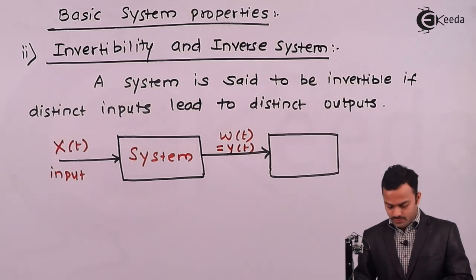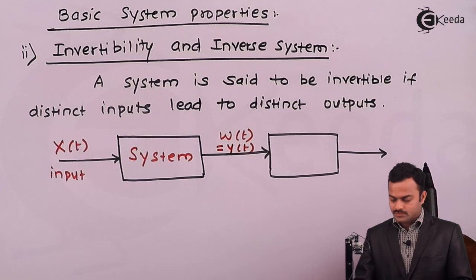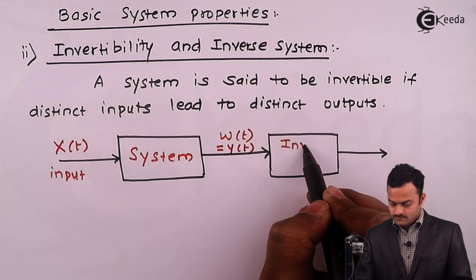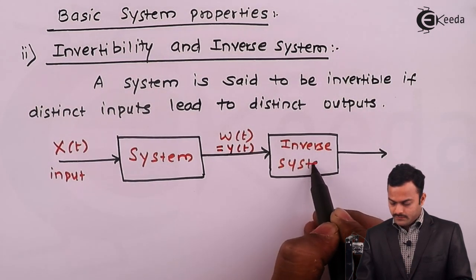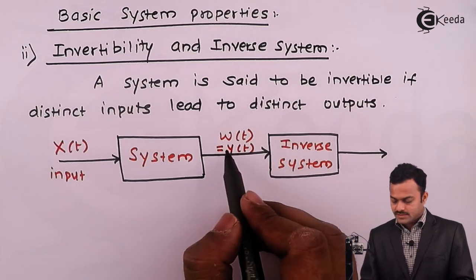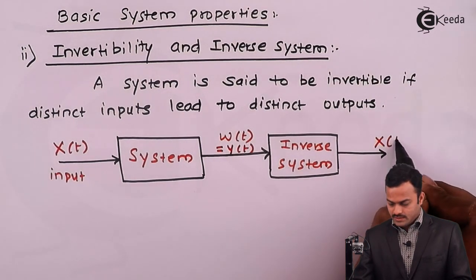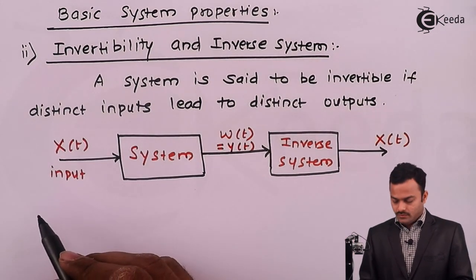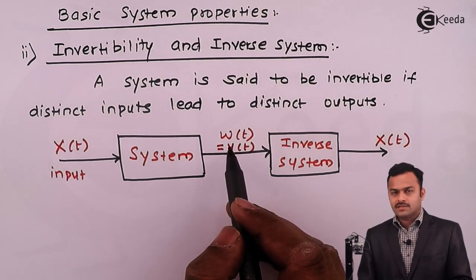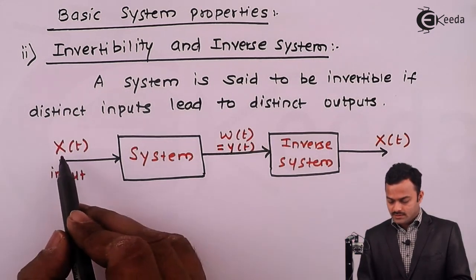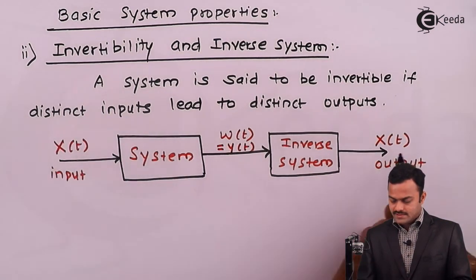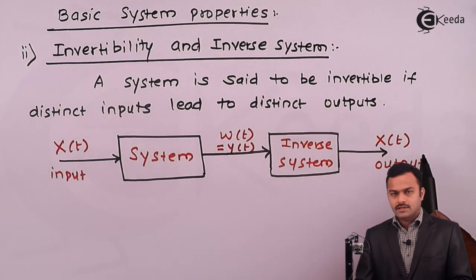y(t) will drive one more system to give another output. This time, the system should take care that whatever input it receives, it should be able to produce the same input as it is — meaning after passing y(t) through this inverse system, we should be able to get x(t). So for a given input x(t) passed through the system, the intermediate output is passed through a new system to get the original signal itself. After passing through this inverse system, the original input is recovered.